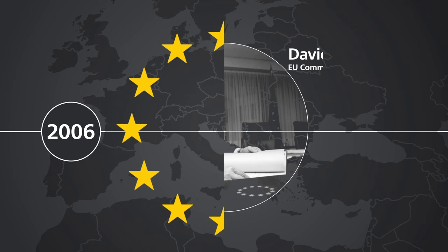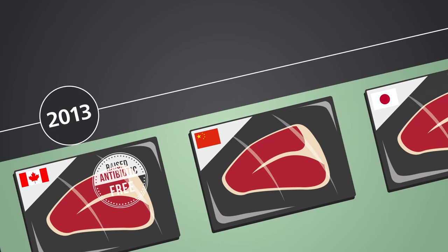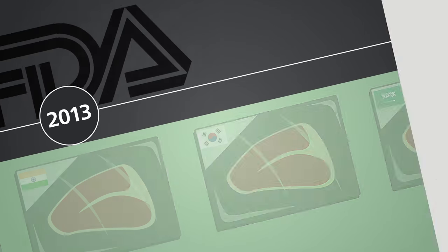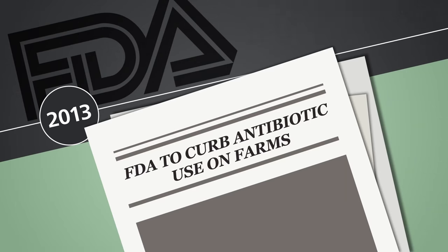The European Union bans the use of antibiotics to fatten livestock. By 2013, regulations are in place in 46 countries around the world. And in the United States, the FDA announces a policy for removing indiscriminate antibiotic use by 2017.